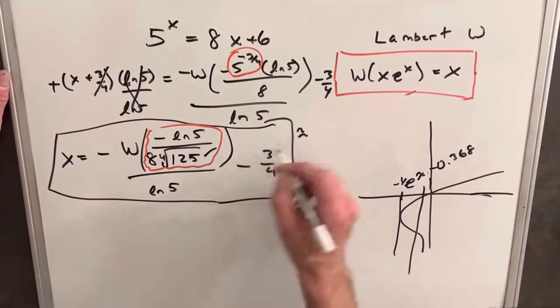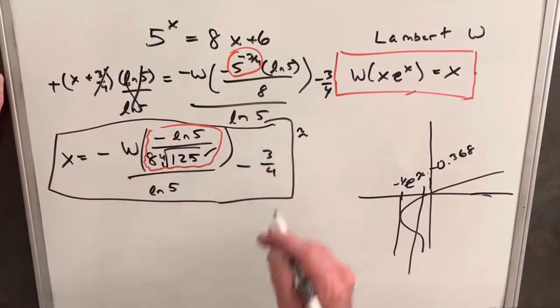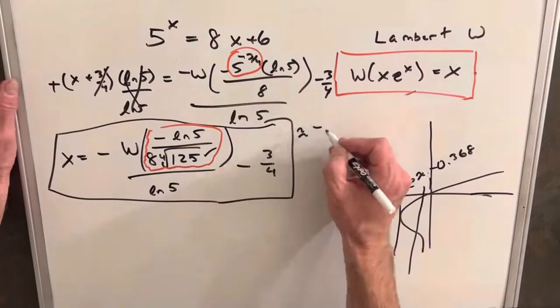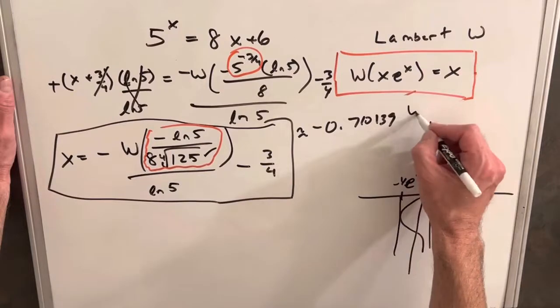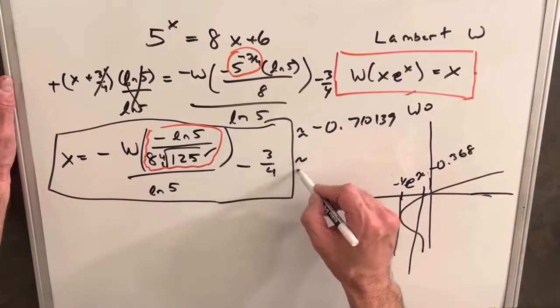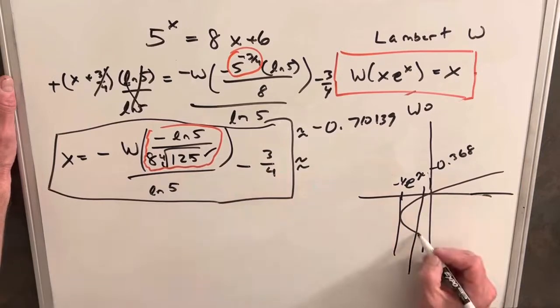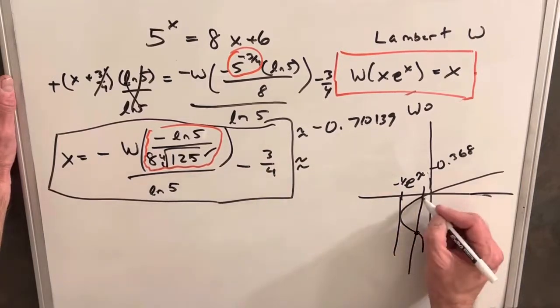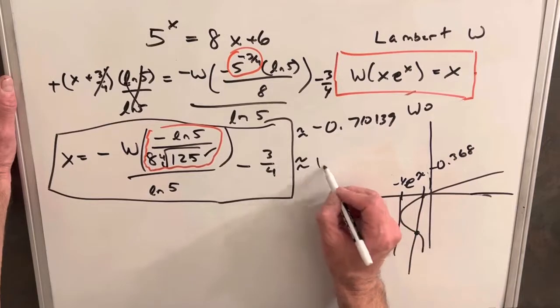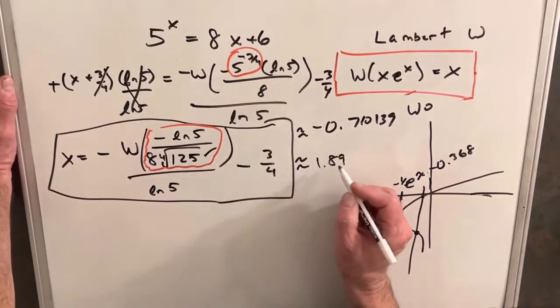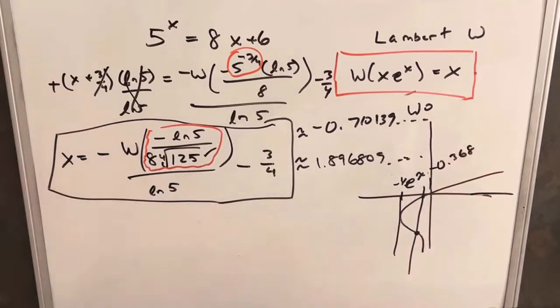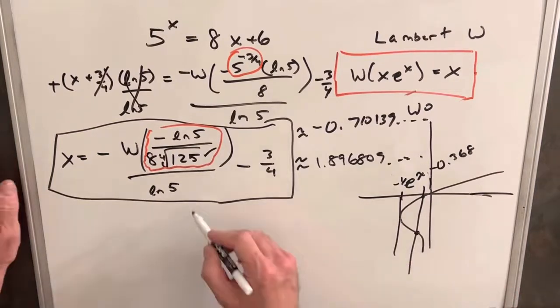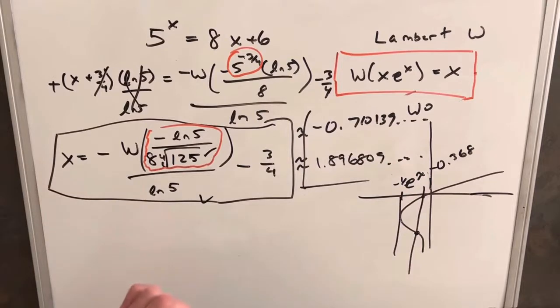So using Wolfram Alpha, I got the principal value of this Lambert W function here, and we get this estimate of the answer. We got minus 0.710139 for our principal branch. And then for our negative one branch, this solution down here, it's going to produce a different answer, and it's going to be around 1.896809. And these are all approximations. So that's going to be our solution. We'll have this, and we'll have our two decimal answers, two real solutions.